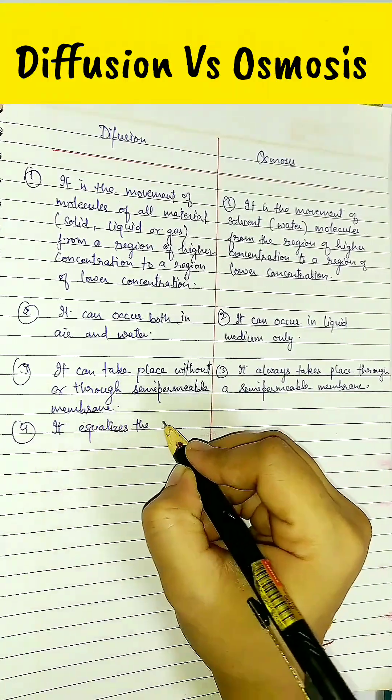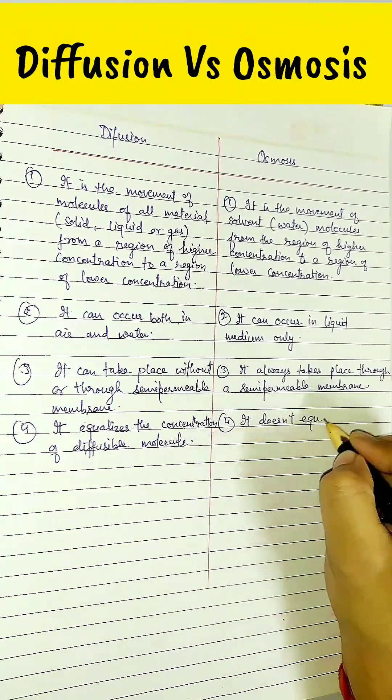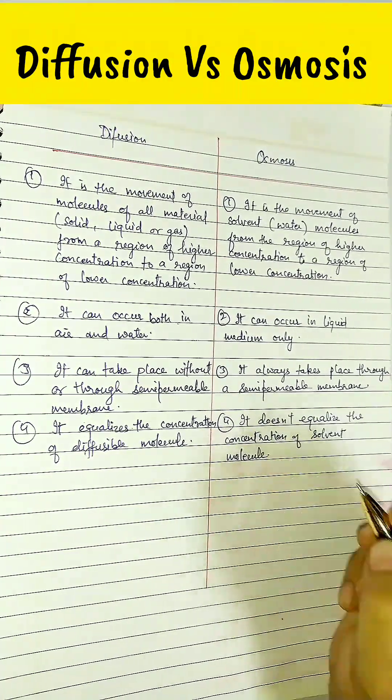The fourth difference is, it equalizes the concentration of the diffusible material across the medium, but it doesn't equalize the concentration of solvent.